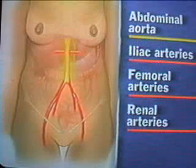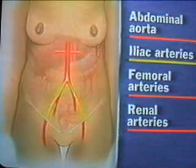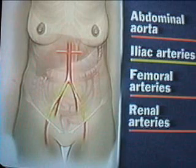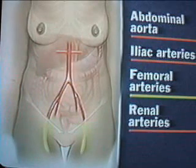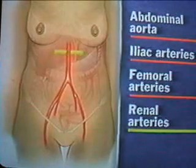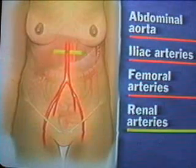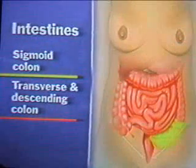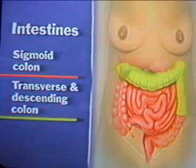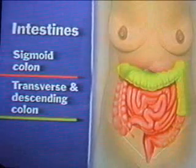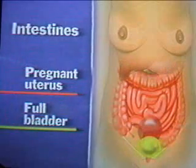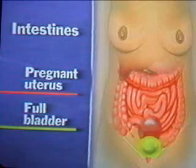The abdominal aorta, which may be palpable in the upper abdomen, bifurcates into the iliac arteries below the umbilicus. As the iliac arteries pass under the inguinal ligaments, they become the femoral arteries. The renal arteries branch off the aorta in the epigastric area. The intestines fill much of the abdomen. The sigmoid colon and portions of the transverse and descending colon may be palpable as tubular masses. Except for a pregnant uterus or a distended bladder, normal pelvic organs are not detectable through the abdominal wall.